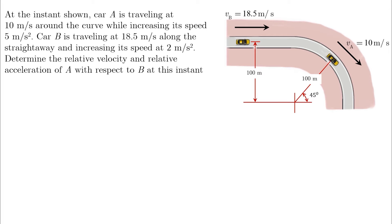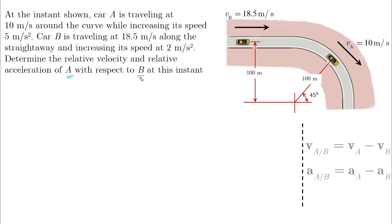At the instant shown, car A is traveling at 10 meters per second around the curve while increasing its speed at 5 meters per second squared. Car B is traveling at 18.5 meters per second along the straightaway and increasing its speed at 2 meters per second squared. Determine the relative velocity and relative acceleration of A with respect to B at this instant.